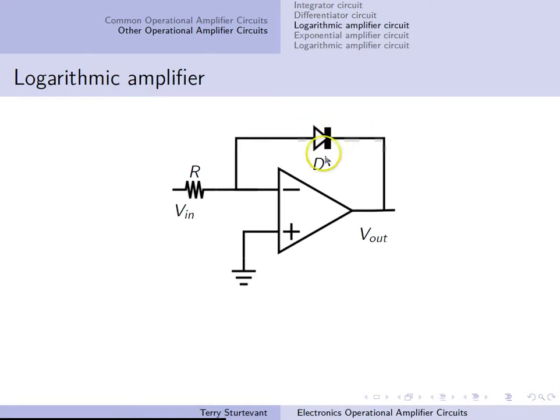In a logarithmic amplifier, a diode replaces the feedback resistor. Now the output is related to the logarithm of the input. The output is proportional to minus the log of VIN.